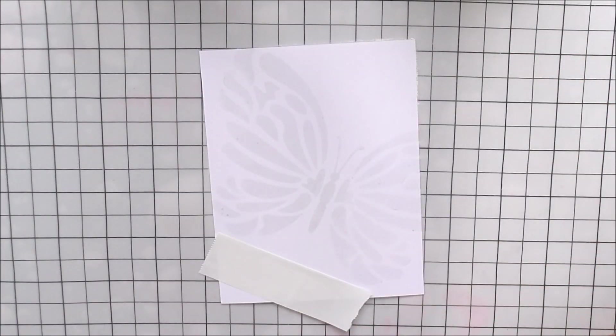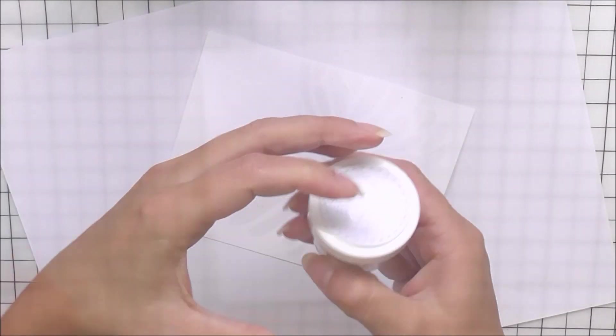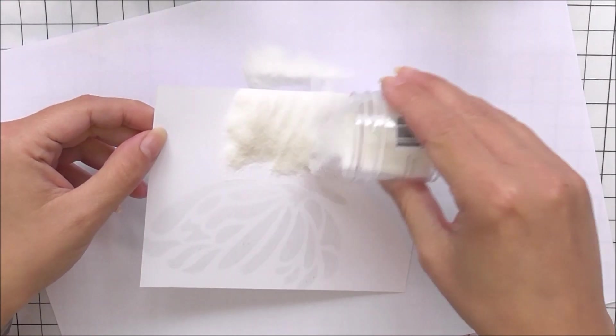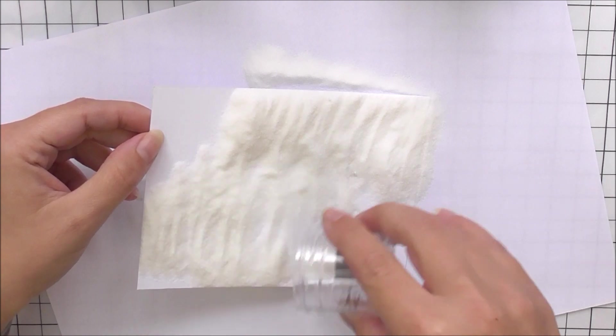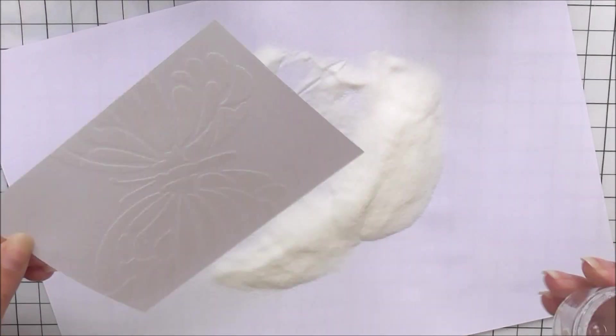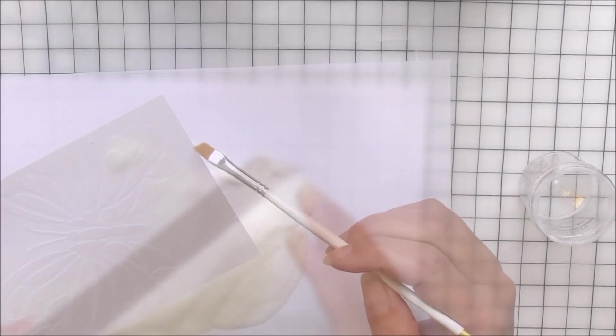Once I've covered the whole stencil that I wanted to do, I'm then going to remove the stencil and add over some embossing powder. This is crystal clear embossing powder. You could add whatever color you wanted, but I did want that white from the cardstock to show through.